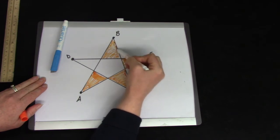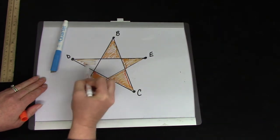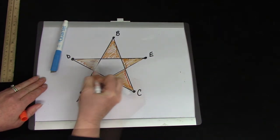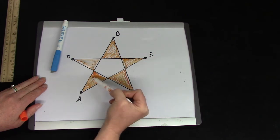Did you say five? You're right. Let's count the five triangles together. One, two, three, four, five.